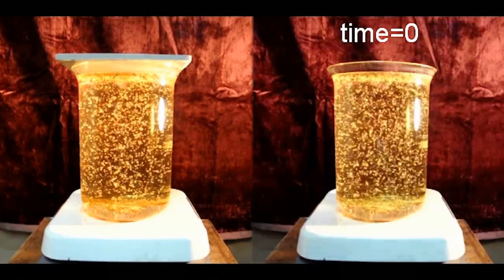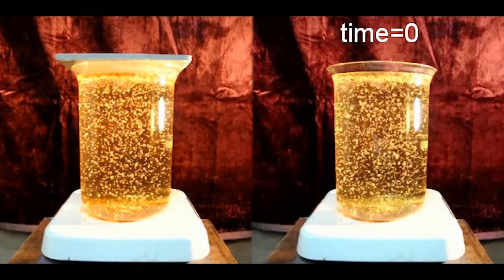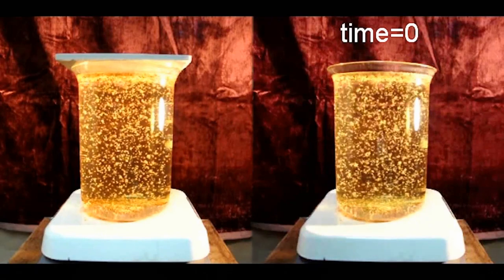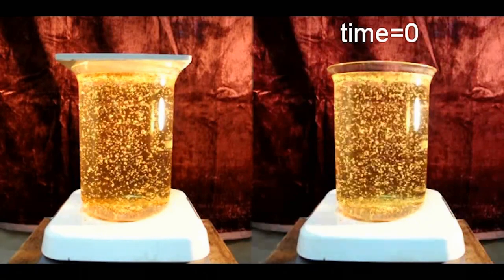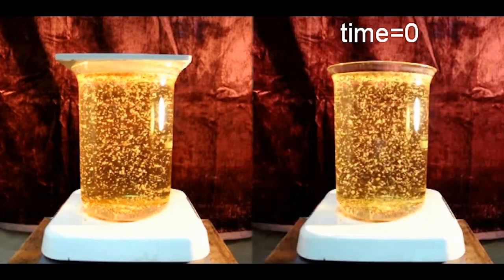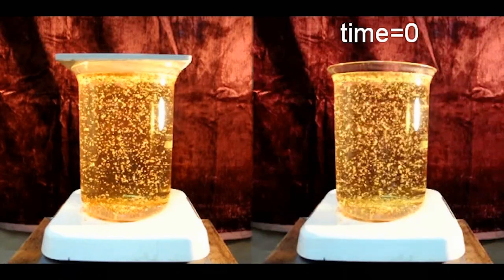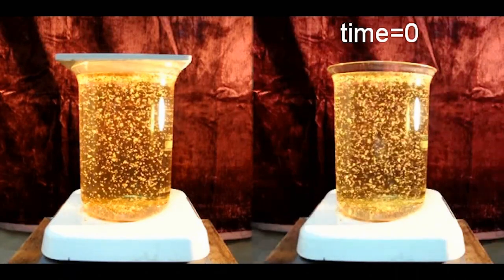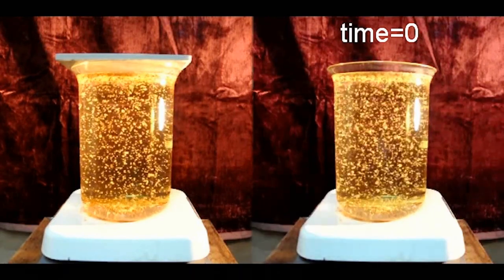When a fluid is heated from beneath, it expands, becoming lighter, less dense than the fluid above it. This top-heavy arrangement is unstable, so fluid motions result as the fluid attempts to restore stability.